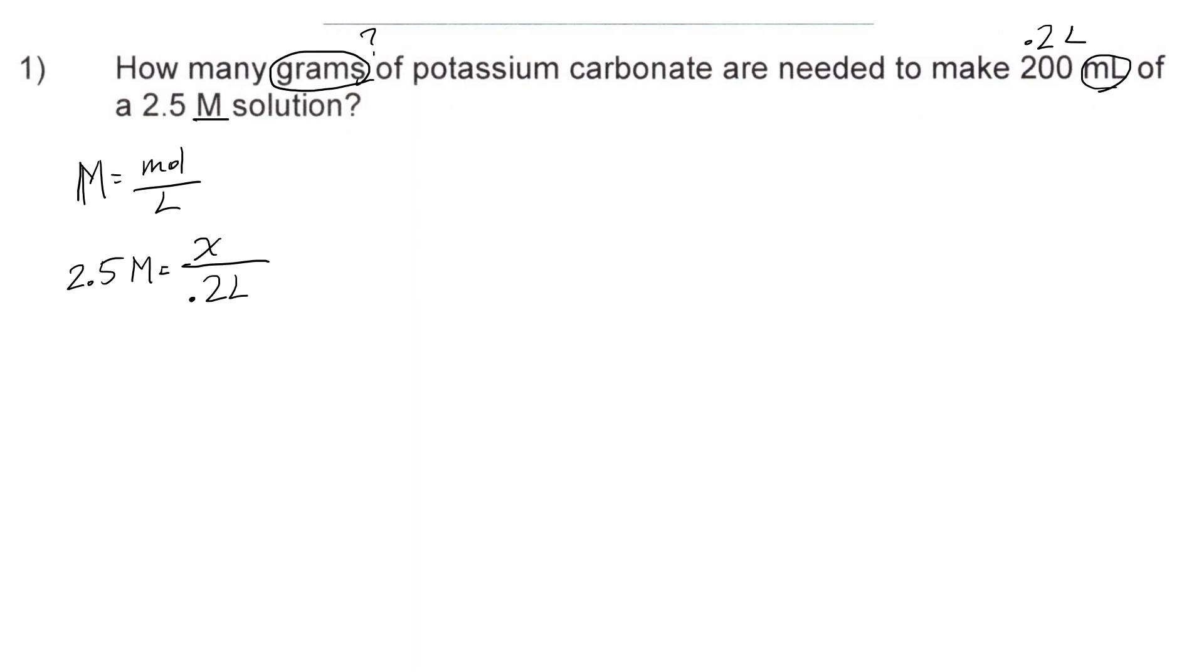To solve for x I'm just going to cross multiply. All right I'm just going to multiply these two together and multiply these two together. You have to just imagine there's a 1 here. All right so that means that 2.5 times 0.2 is equal to x. That means x is equal to 0.5. Our unit here is moles. All right because moles are up here. So 0.5 moles of potassium carbonate which is K2CO3.